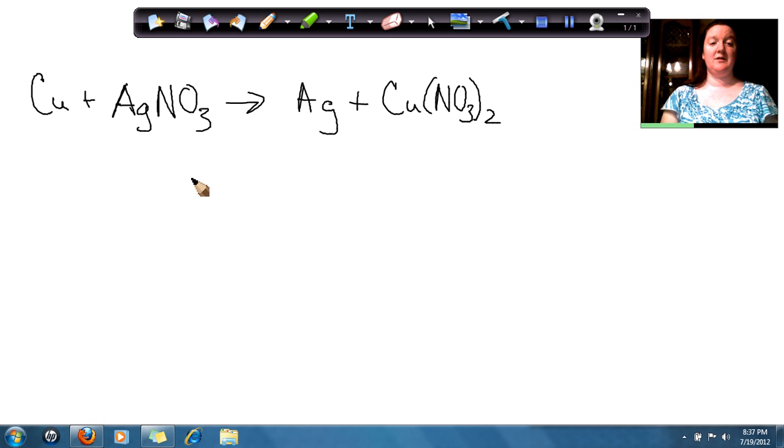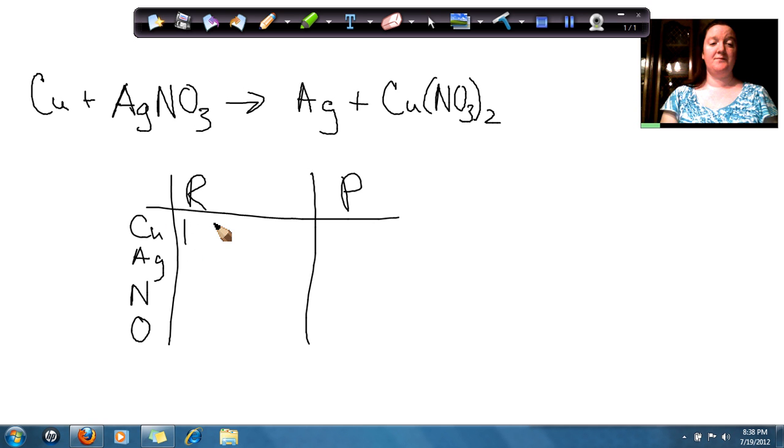Now let's look at our reactants and products to see if we get everything to cancel out. We have copper, silver, nitrogen, and oxygen. If I look at copper, I have one on this side and one on this side. If I look at silver, I have one on that side and one on that side.